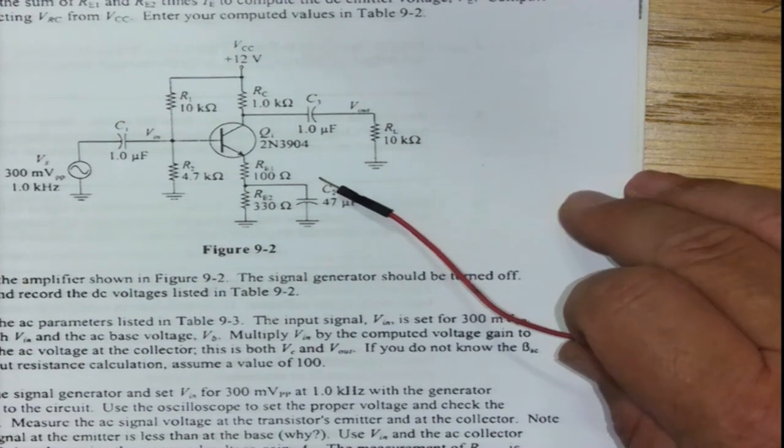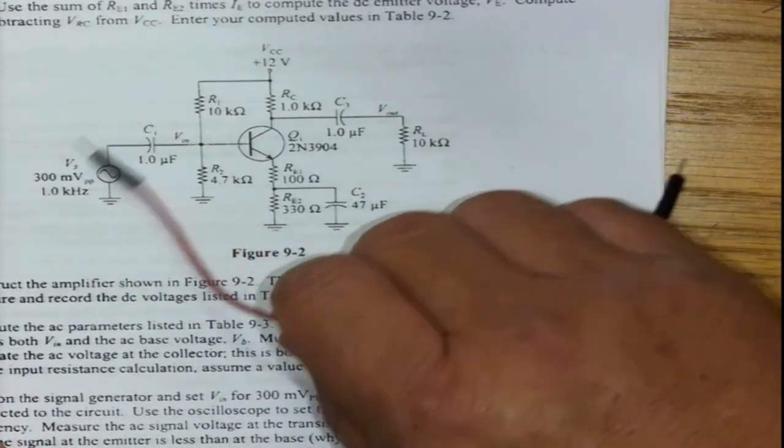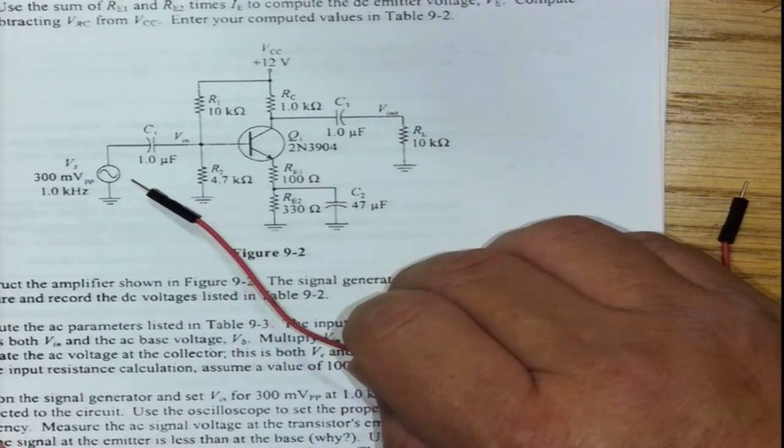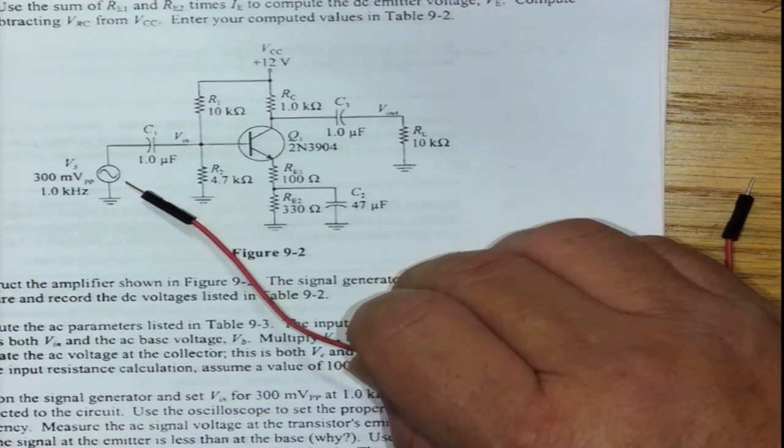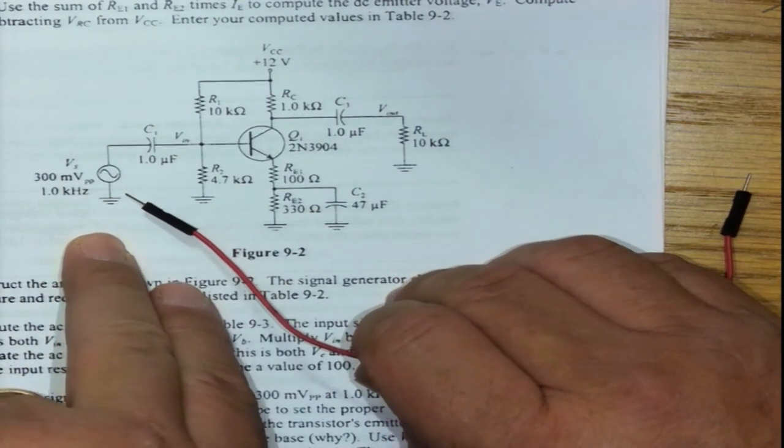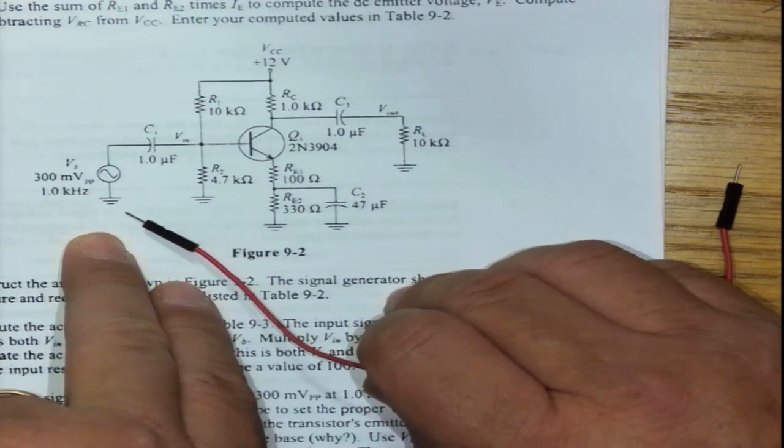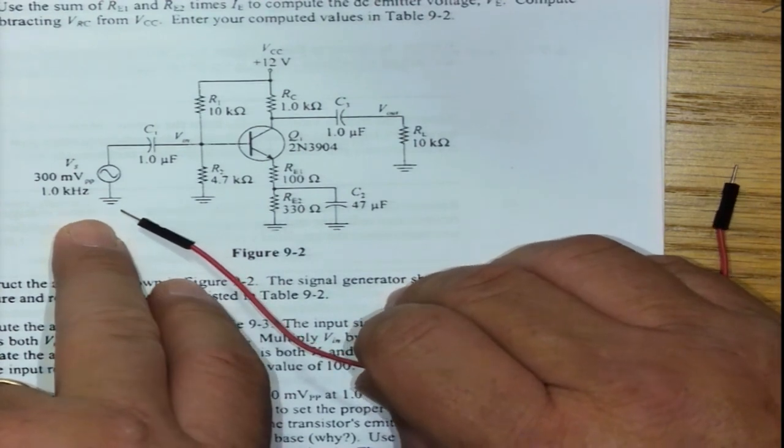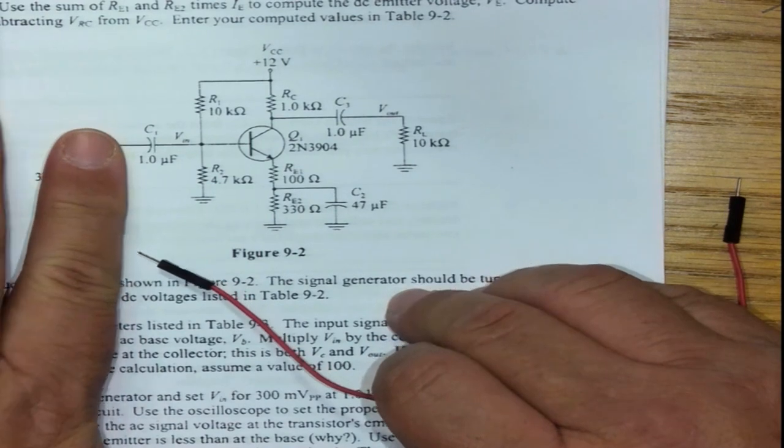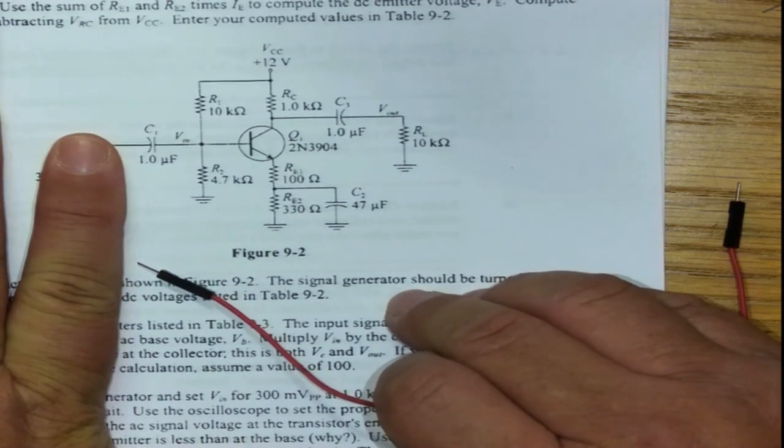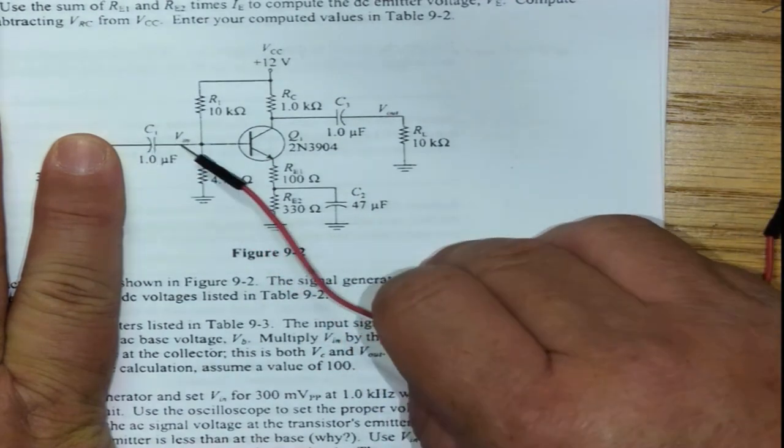So I just want to show you guys today how to construct the circuit. This is the circuit, figure 9.2. It consists of a signal generator. Now that is not a physical component, it's an instrument. And in one of our previous videos, we did show you guys how to set up the audio generator for this experiment. So in essence, with my finger covering that instrument, this is where we start with the circuit.